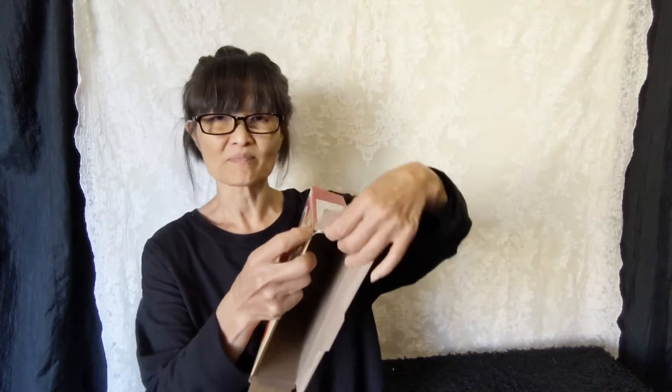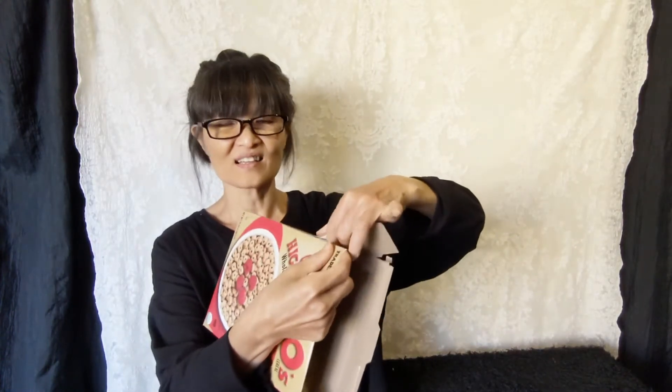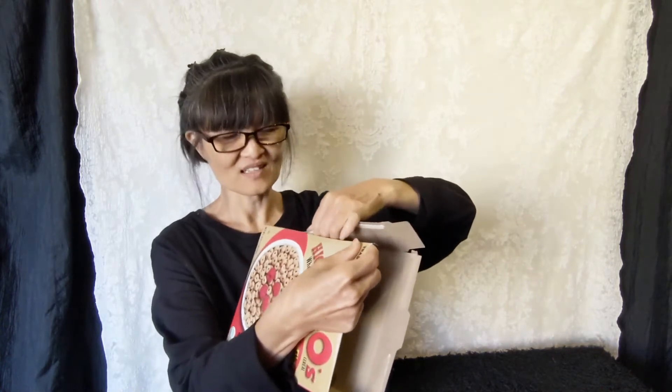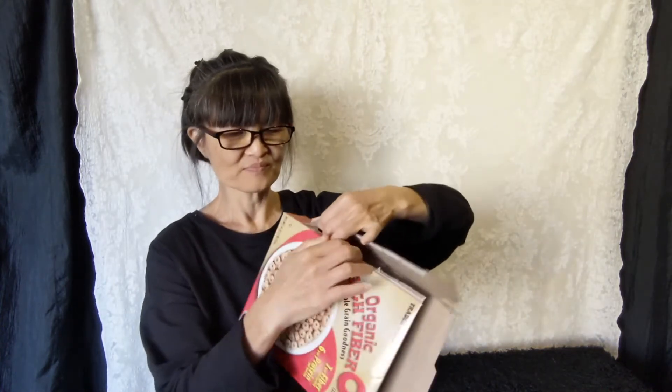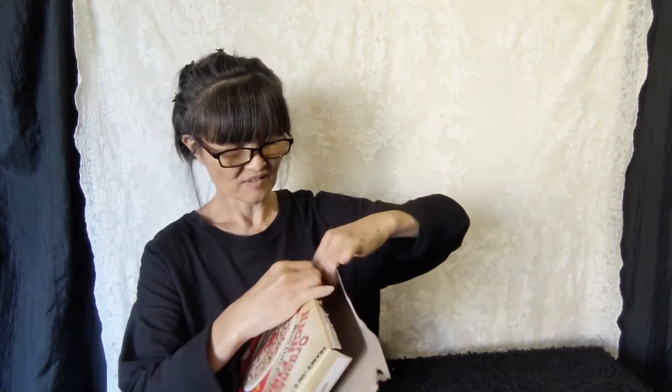So the first things we're going to do is going to open this box. So if you look at the box, you'll find there's a place they overlap. And then that's where you can just put your finger in and just rip it open. That's it. Very simple. You don't need to use scissors. There you go.